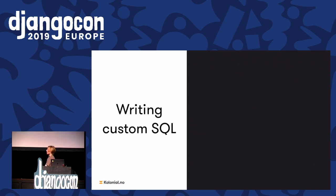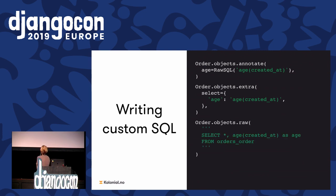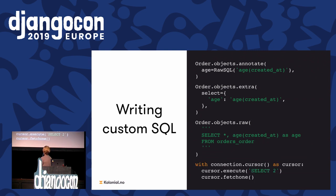For the last example — custom SQL. If I want to use the age function in Postgres, I can annotate my query set with a RawSQL class. The same thing can also be done using extra, which has a lot more options — check the documentation if you're interested. Or if I want to write the entire SQL myself, I can do that using raw on the query set. Or I can build the entire thing myself using a database cursor where I can run my own SQL and get any output — execute SQL and use fetchone, which will return one row, in this case a tuple where the value is just two.